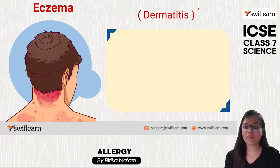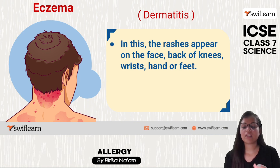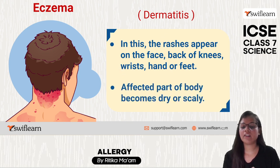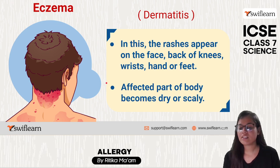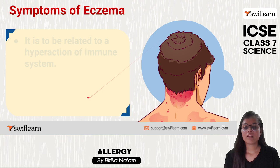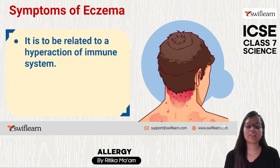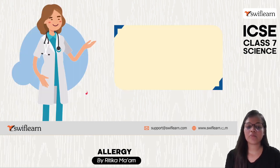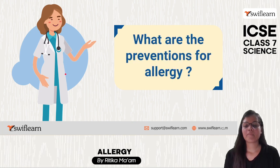Next is eczema, also known as dermatitis. Rashes appear on the face, back of the knees, wrists, hands, or feet. The affected body part becomes dry and scaly. Symptoms can be related to hyperactivity of the immune system, and it is sometimes found in families with an allergic background.